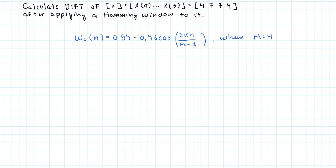Okay, so let's calculate the window values. w(0) equals 0.54 minus 0.46 cosine of 0, that is equal to 0.08.